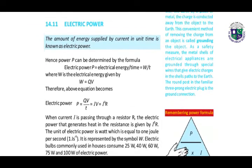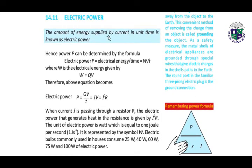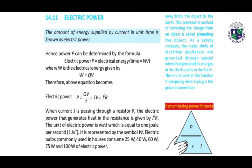What is electric power? The amount of energy supplied by current in joules per unit time is known as electric power. Electric power equals W over T, where W is electrical energy. W equals QV, so from the above equations, electric power equals QV over T equals IV, which equals I²R.